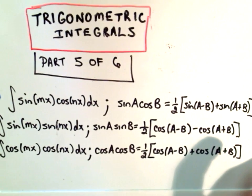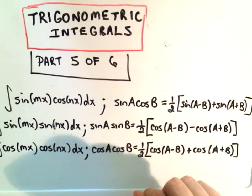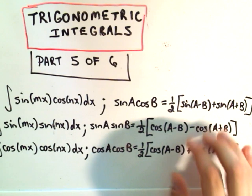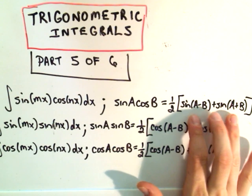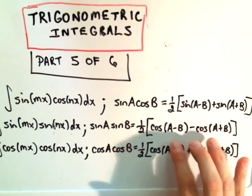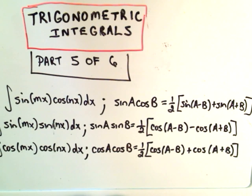The idea is we're going to use these corresponding formulas on the right hand side, and we're either going to be able to write it as an addition of a sine function, subtraction of cosine functions, or addition of cosine functions.